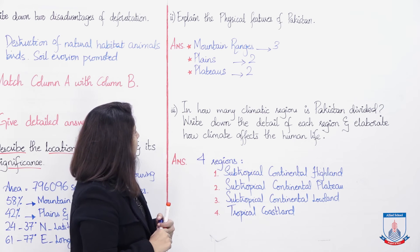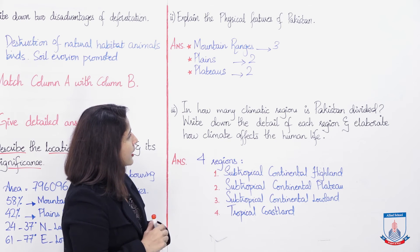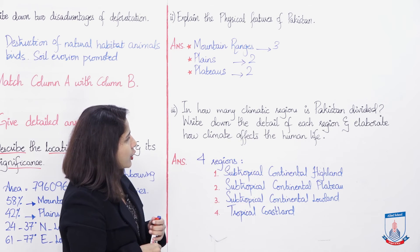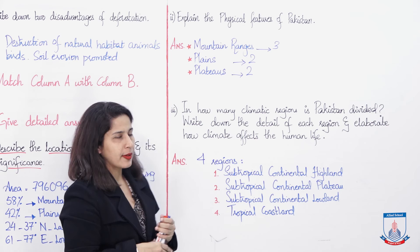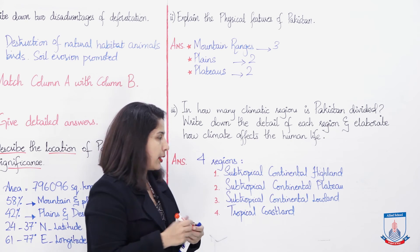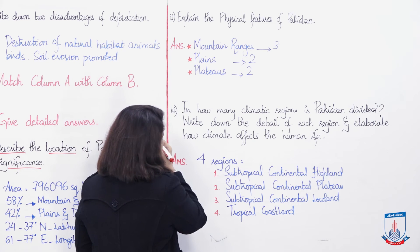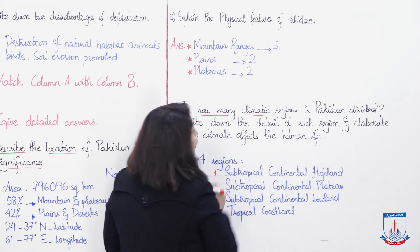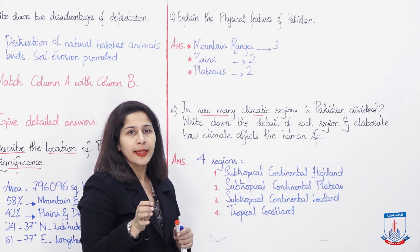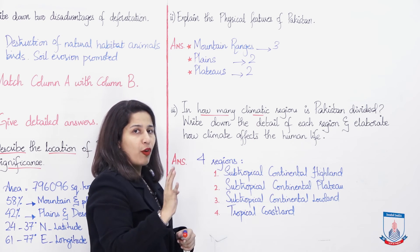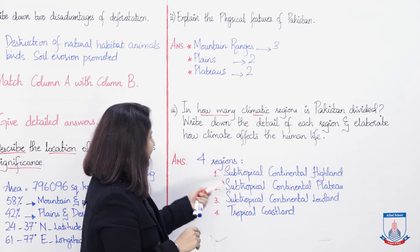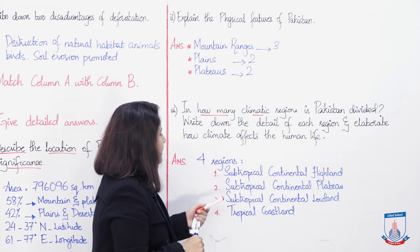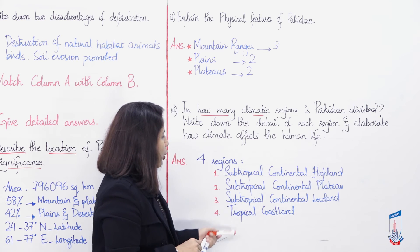The third detailed question: In how many climatic regions is Pakistan divided? Write down the detail of each region and elaborate how climate affects human life. For the first part — Pakistan has four climatic regions: subtropical continental highland, subtropical continental plateau, subtropical continental lowland, and tropical coastland.